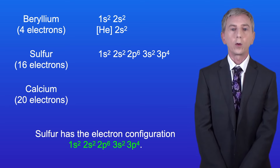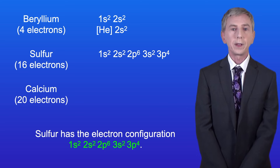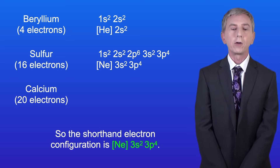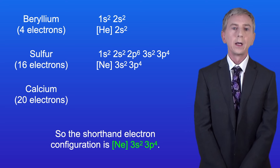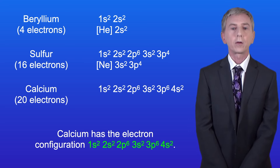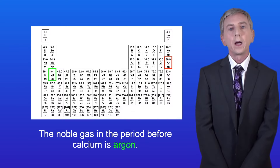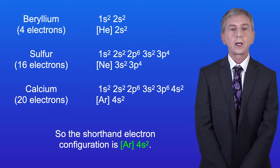Sulfur has the electron configuration 1s2, 2s2 2p6, 3s2 3p4, and the noble gas in the period before sulfur is neon, so the shorthand electron configuration is [Ne] 3s2 3p4. Calcium has the electron configuration 1s2, 2s2 2p6, 3s2 3p6 4s2, and the noble gas in the period before calcium is argon, so the shorthand electron configuration is [Ar] 4s2.